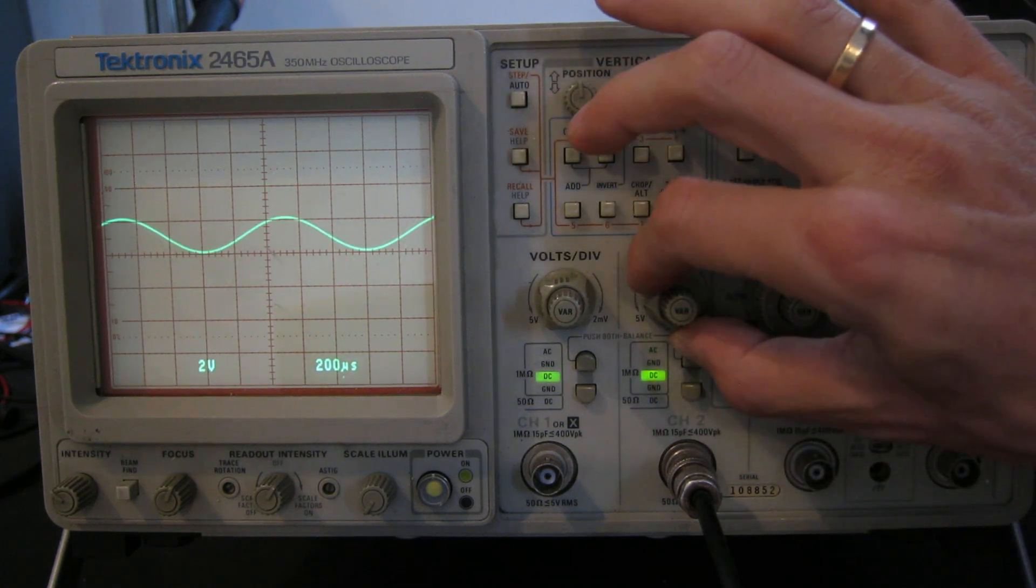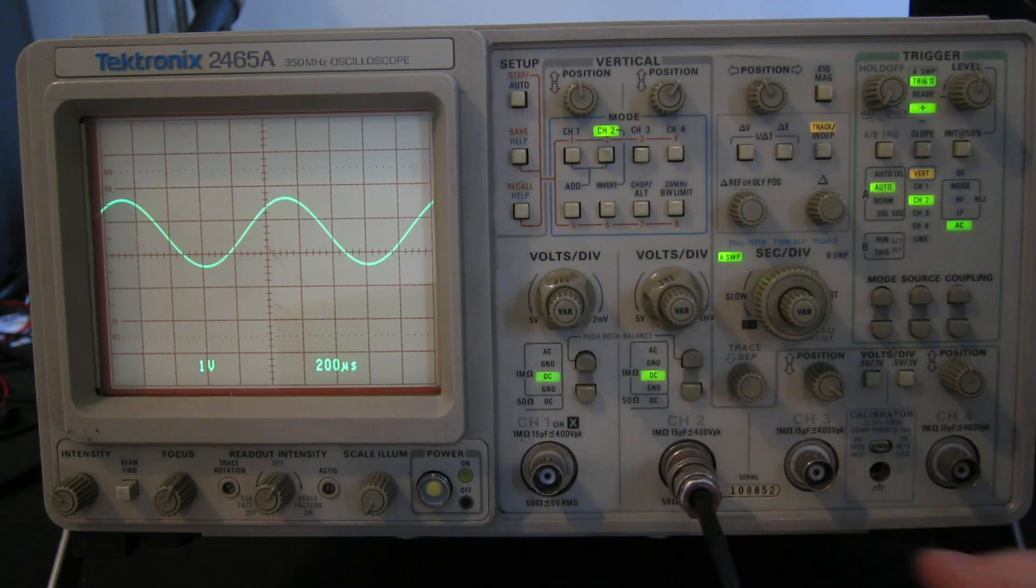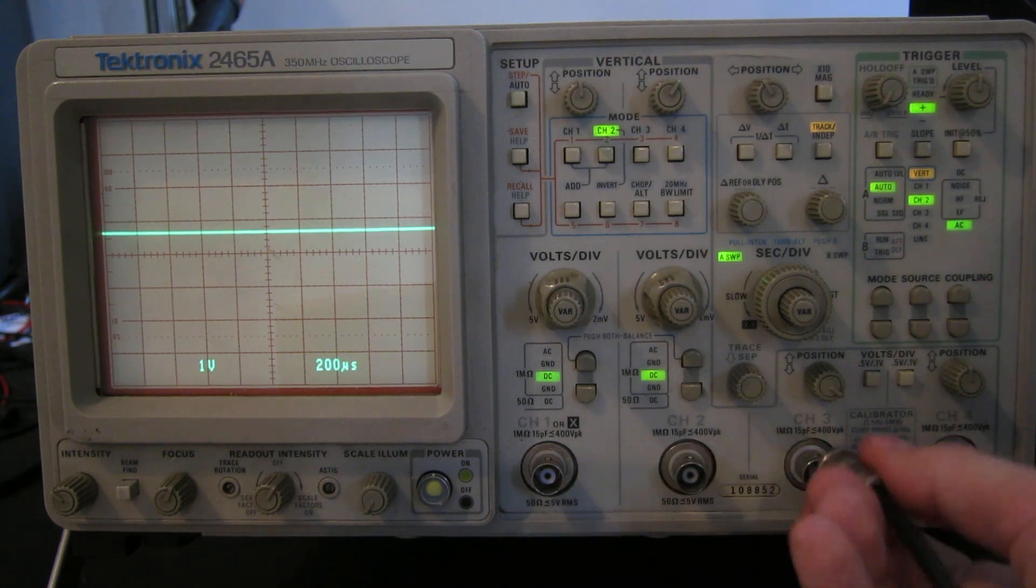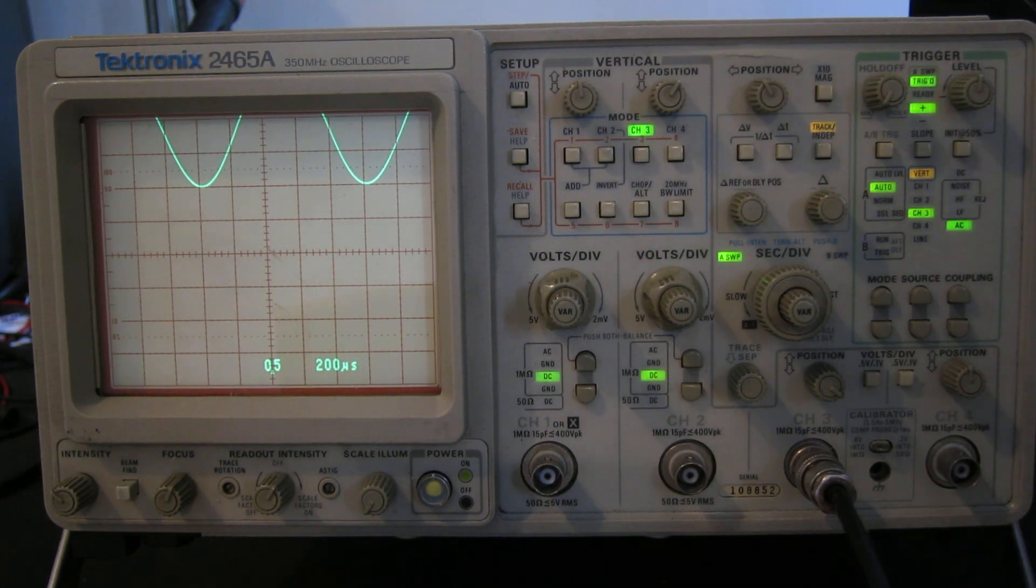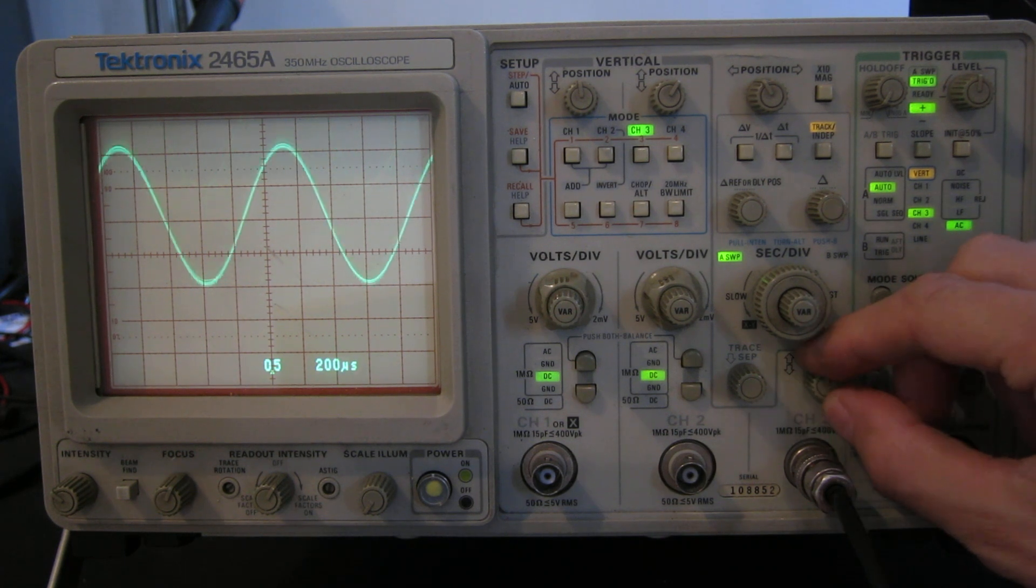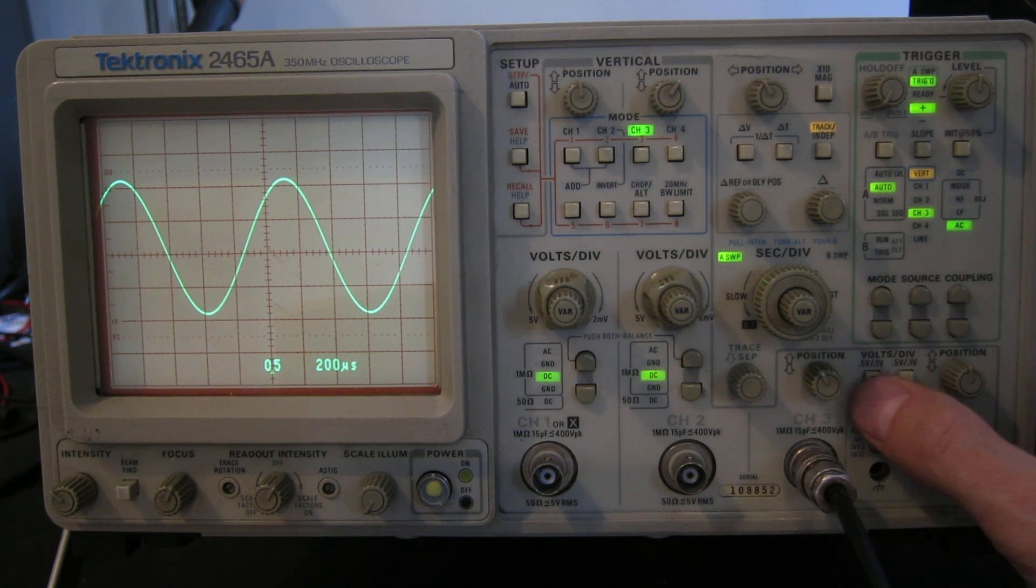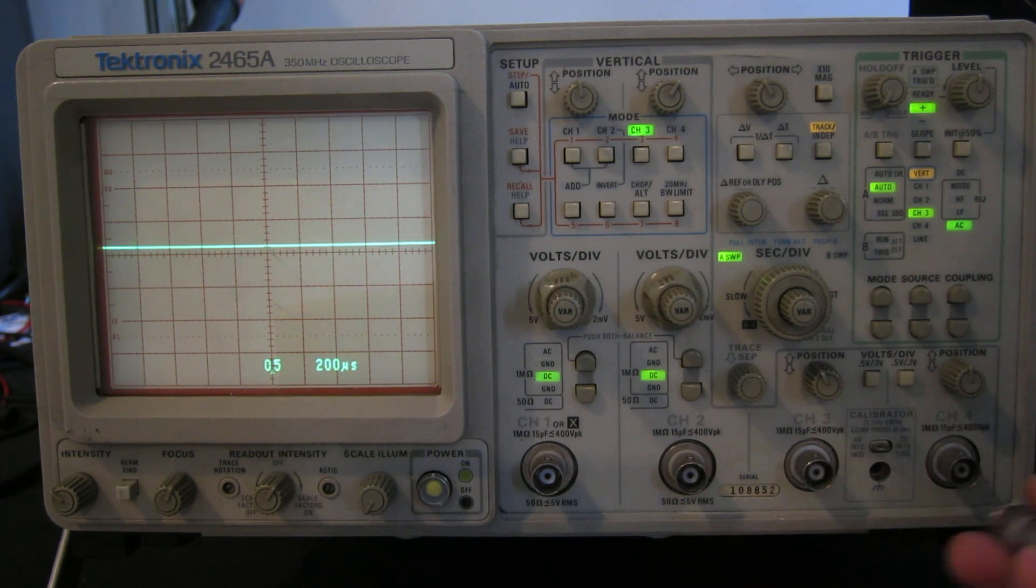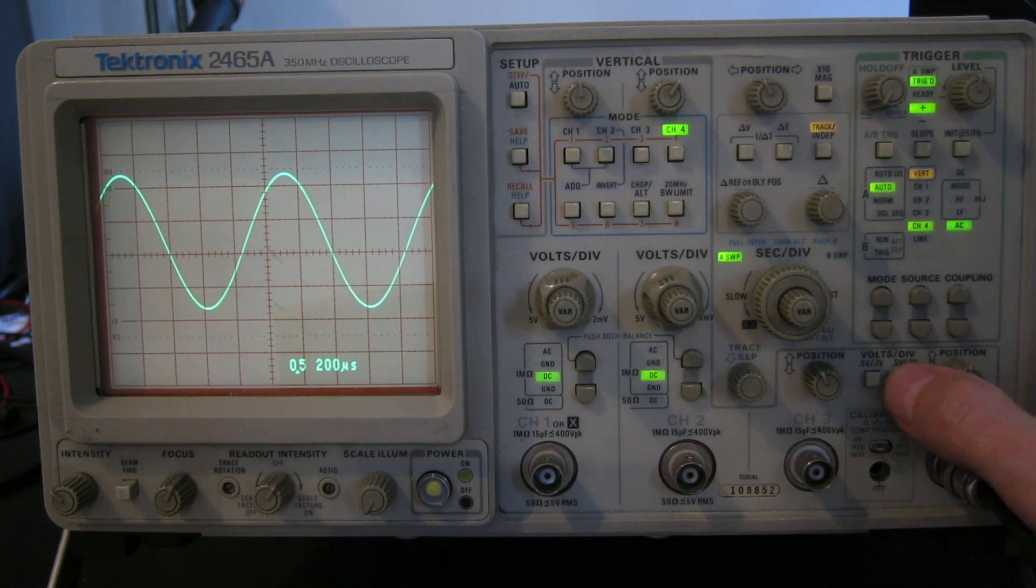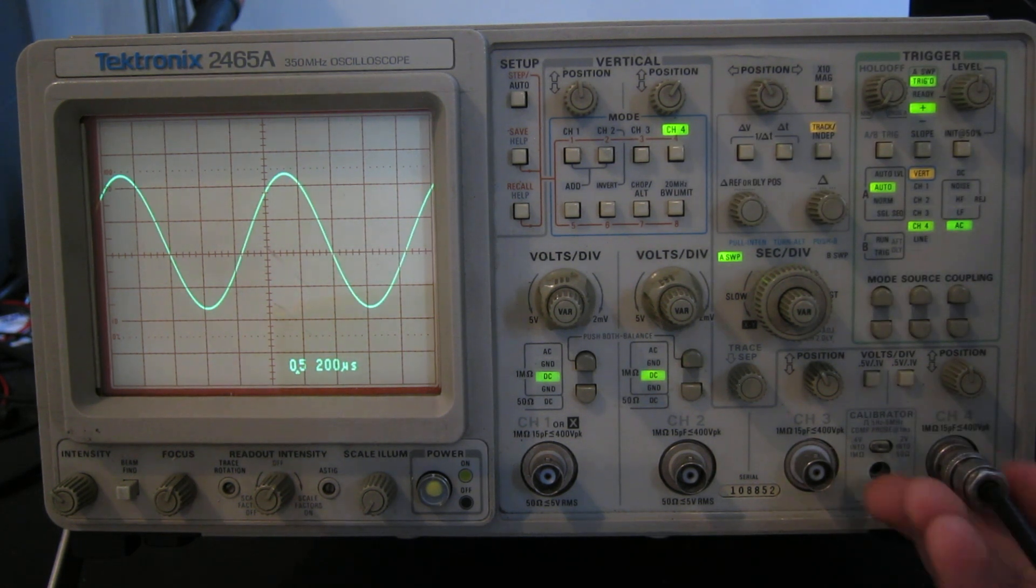Same thing. Move it into view. Attenuator works as you'd expect. Channel 3 and 4 don't have such comprehensive attenuator settings, but they do work. Here we go. That's channel 3. It's got two settings, 0.1 volts per centimeter and 0.5 volts per centimeter. Channel 4, likewise, just the same, works fine.